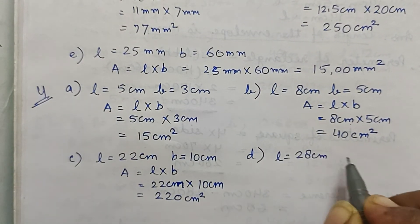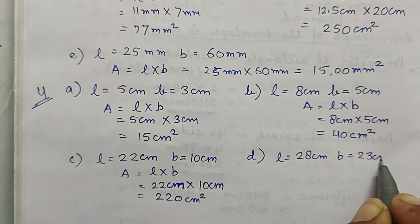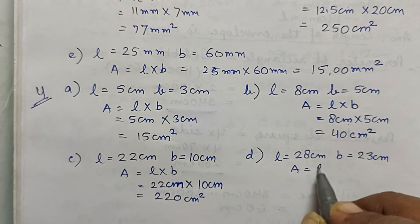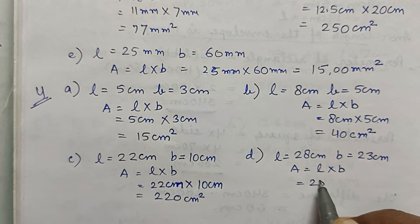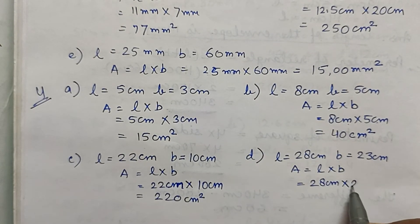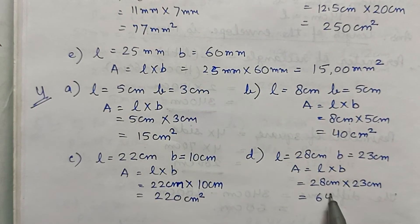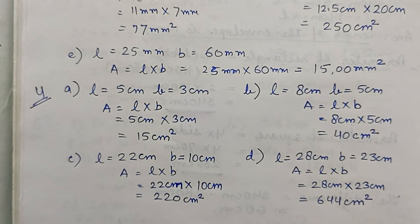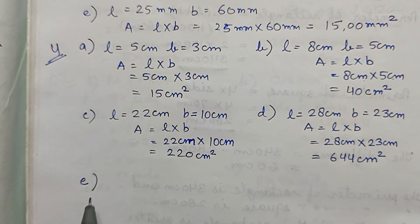Part d: length is 28 centimeter and breadth is 23 centimeter. Area is equal to L × B, so 28 cm × 23 cm. When we multiply them we get 644 centimeter square.